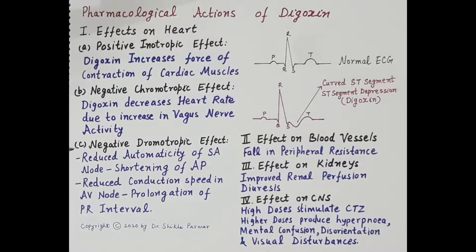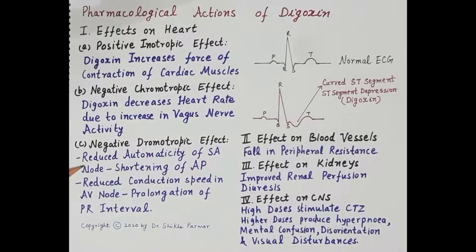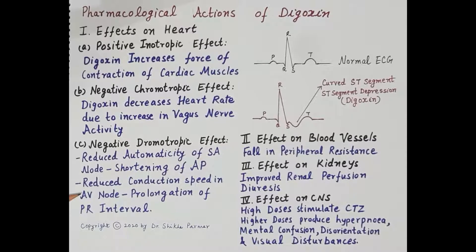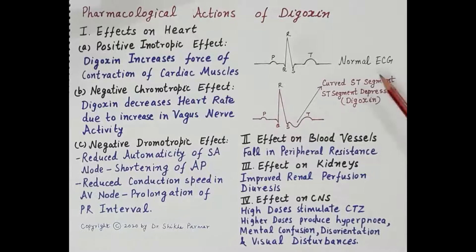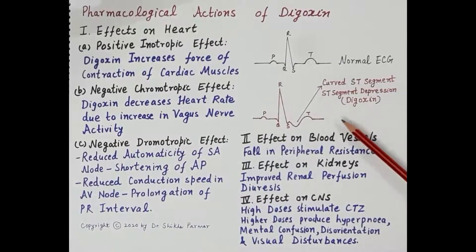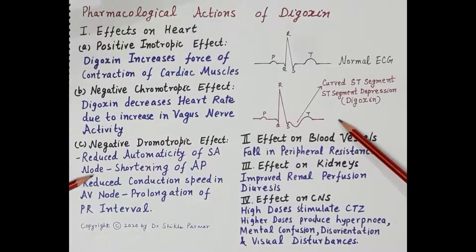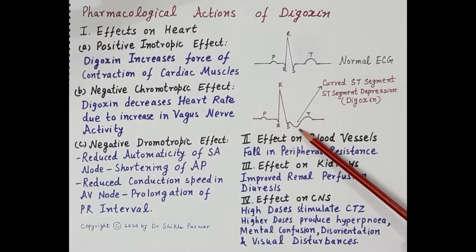Digoxin also shows a negative dromotropic effect, depressing both the SA node and the AV node. Reduced automaticity of the SA node produces a shortening of the action potential. Additionally, digoxin reduces conduction speed in the AV node, causing prolongation of the PR interval. This diagram shows the normal ECG compared to the ECG under the influence of digoxin, illustrating these characteristic changes.